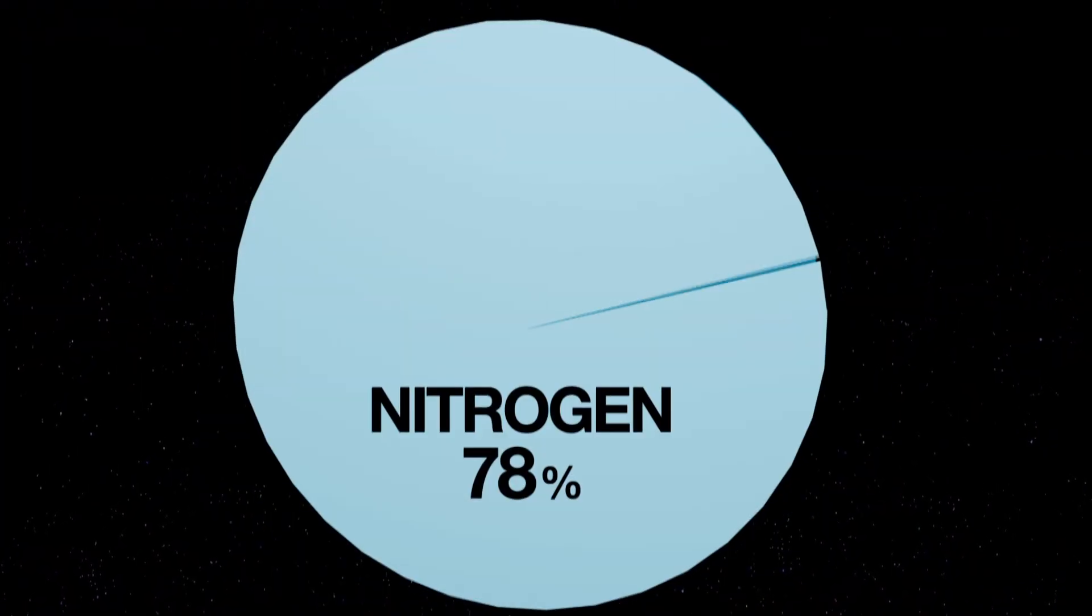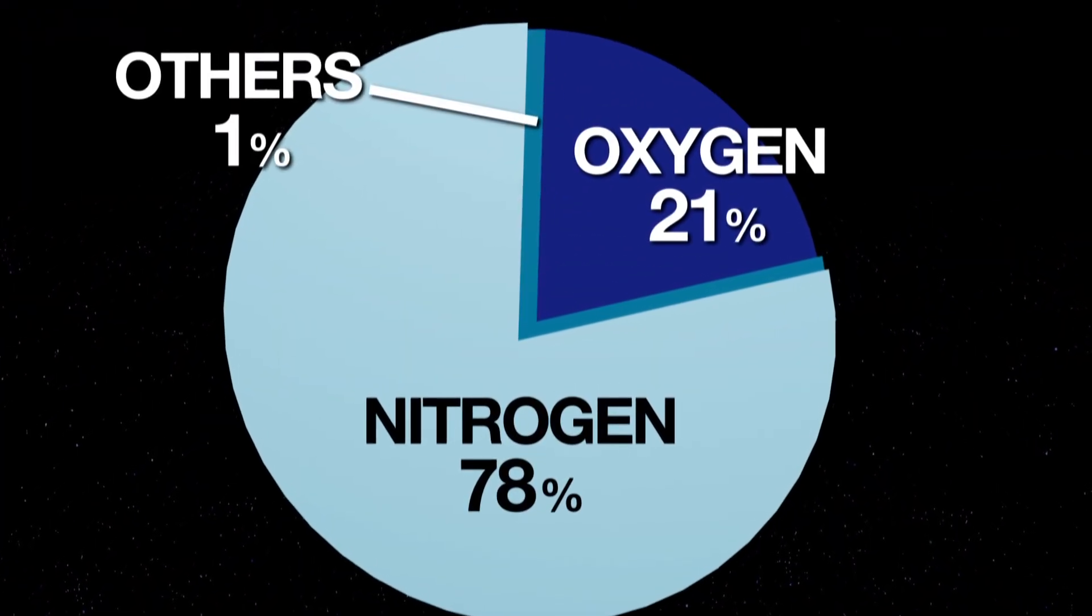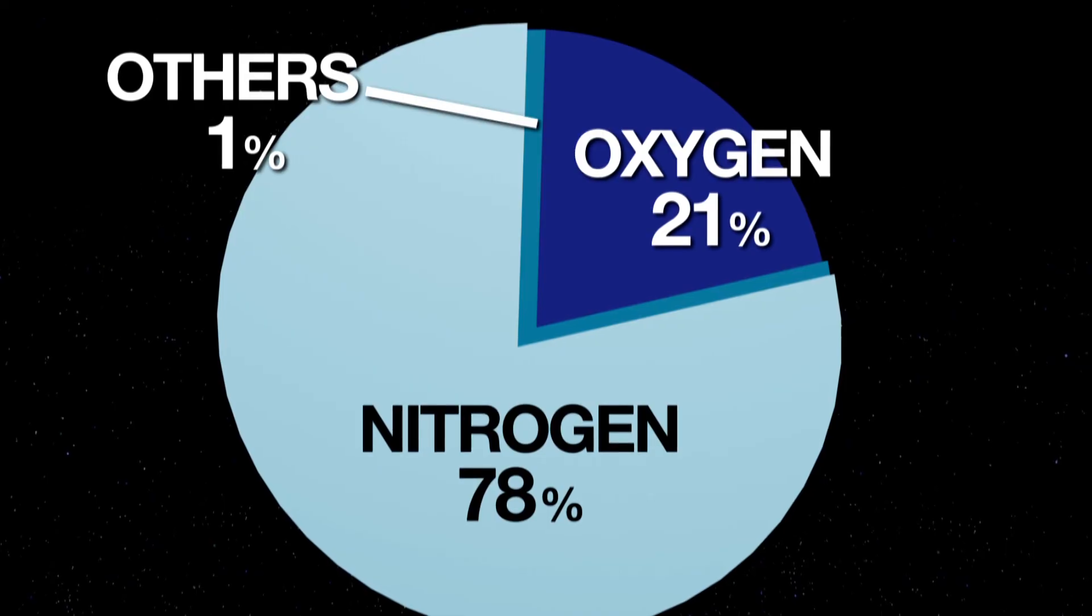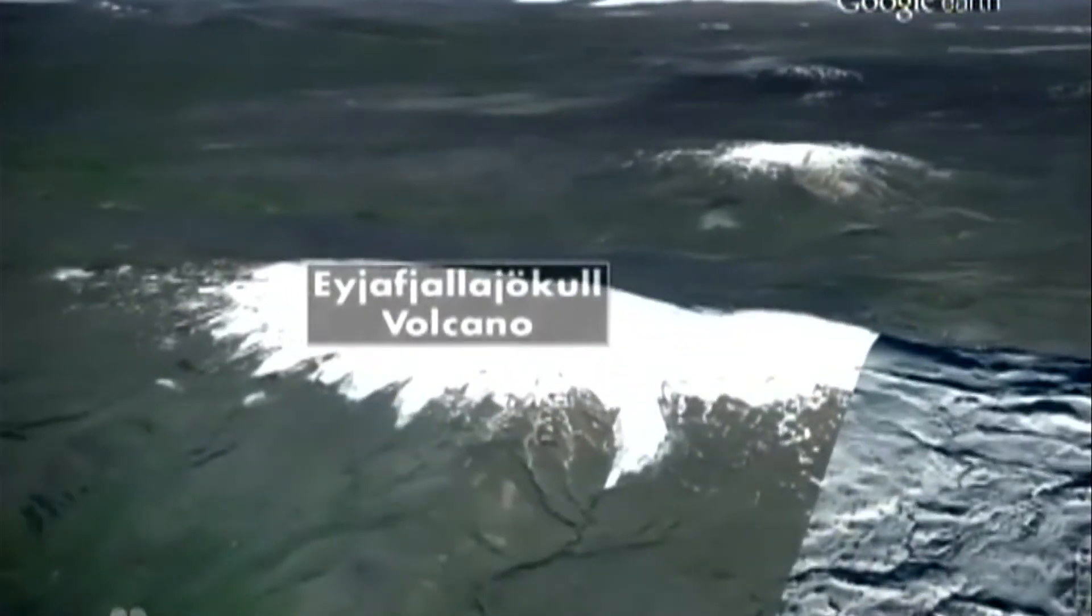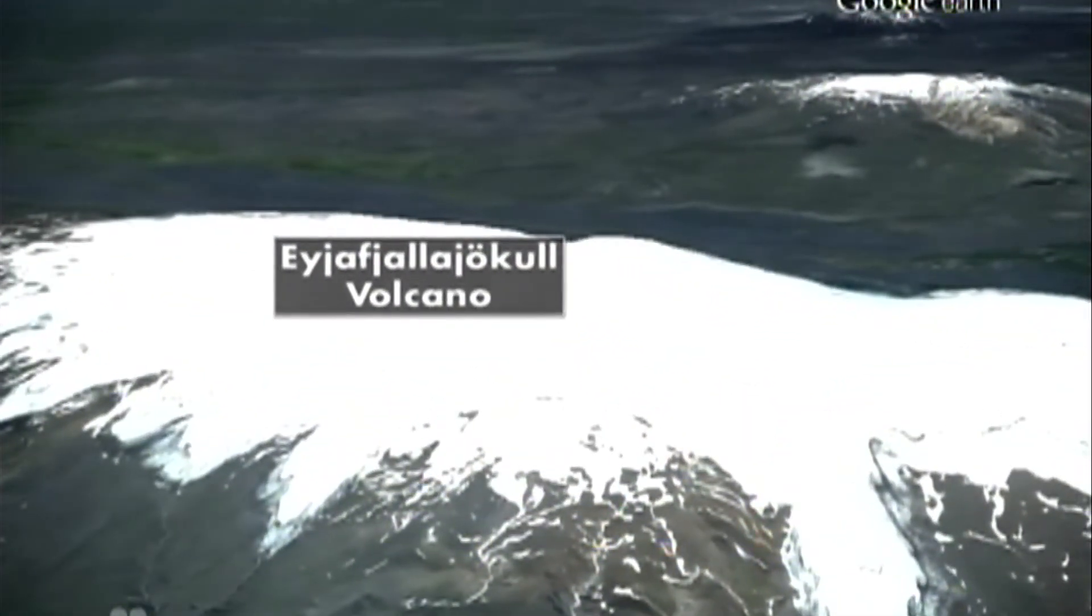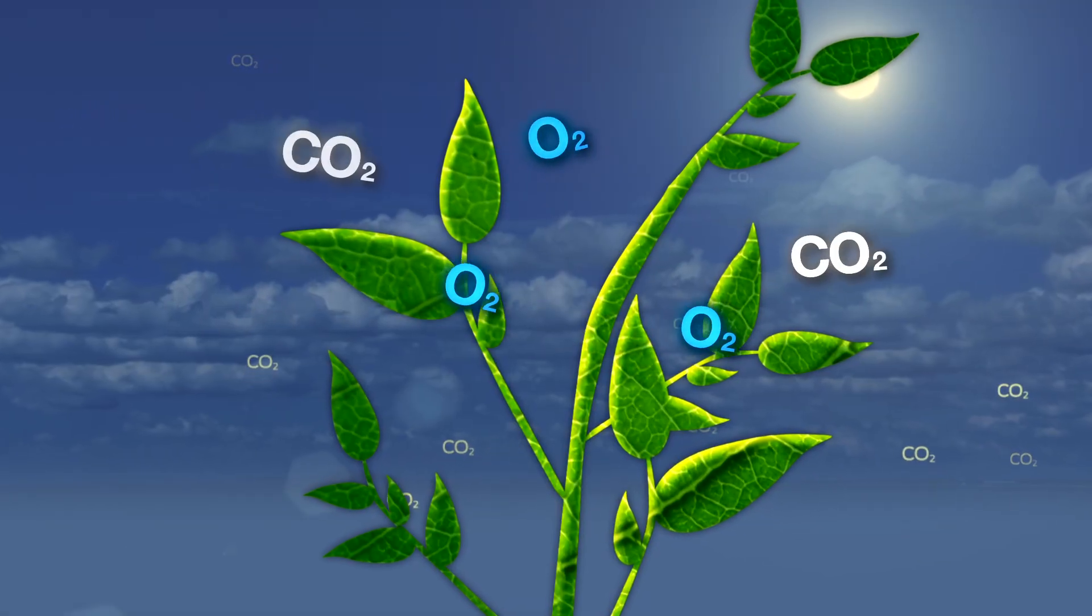Carbon dioxide makes up less than half of one percent of the air we breathe. Air is mostly nitrogen and oxygen. Eruptions of volcanoes, like the one in Iceland, add CO2 to the atmosphere. And of course, so does the carbon or life cycle.